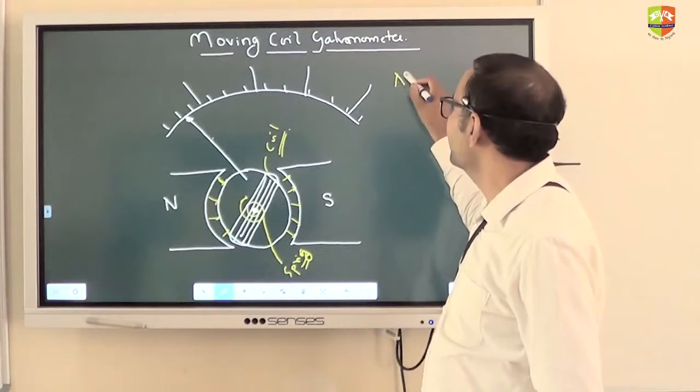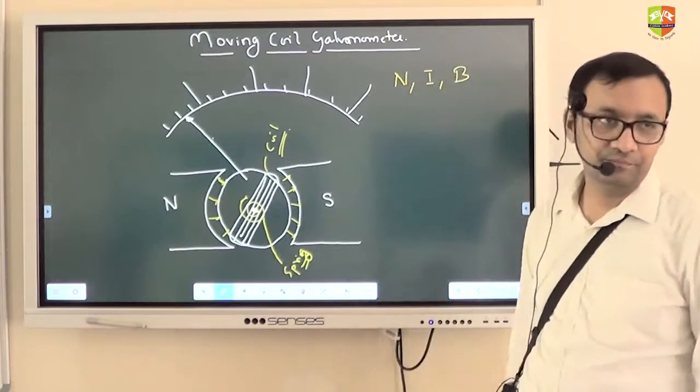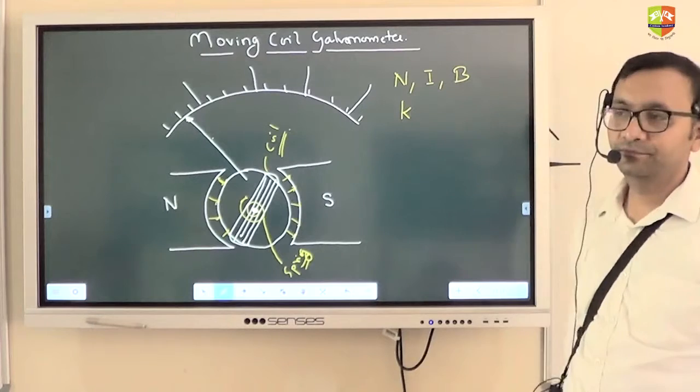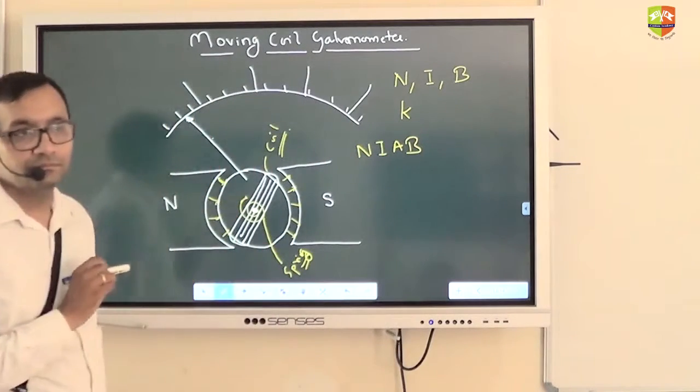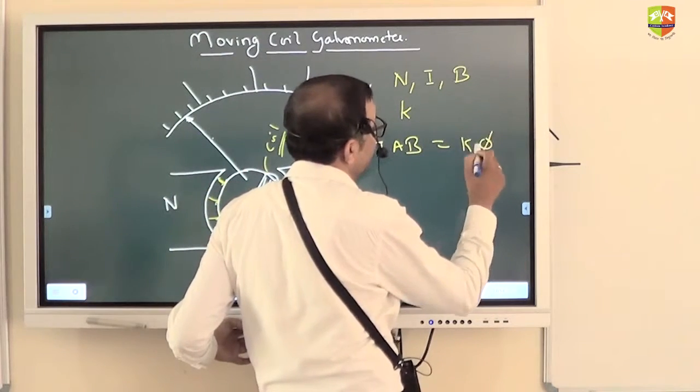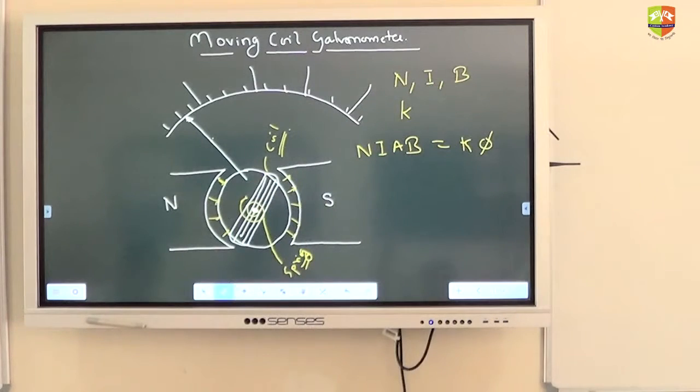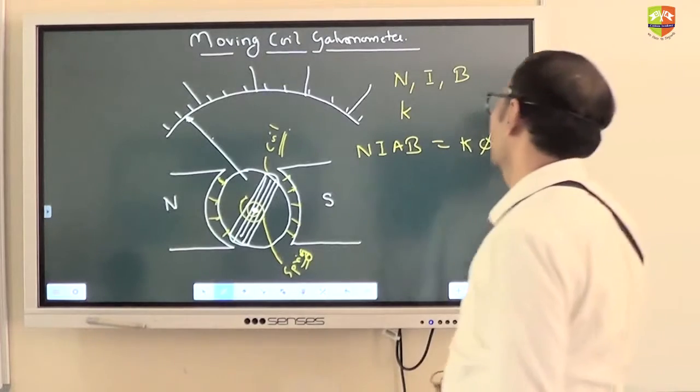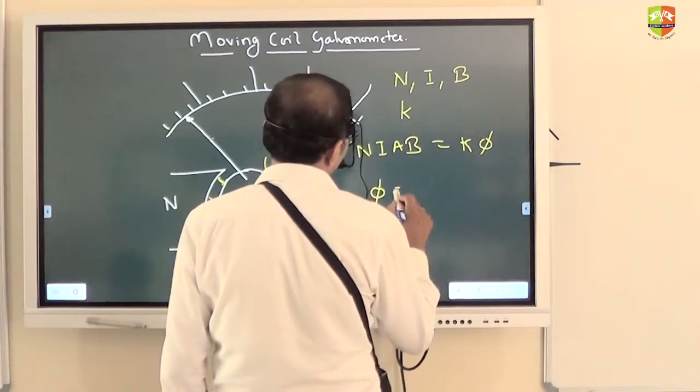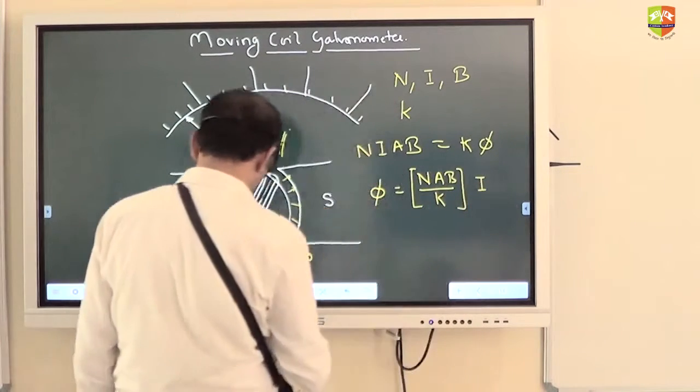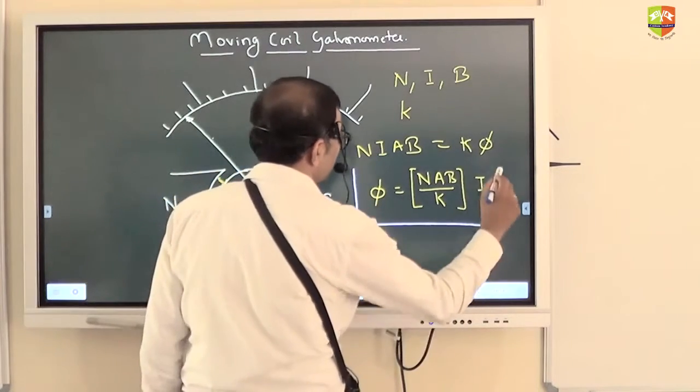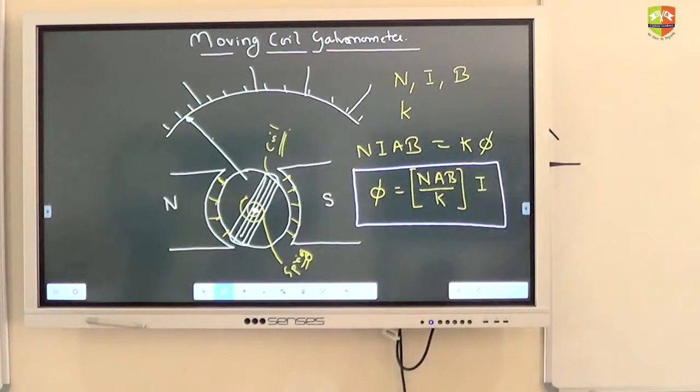So suppose number of turns is N, current is I, and magnetic field is B, and torsional spring constant is K. Then what is the equation? Equation is like this: NIAB. This is the torque. When this torque equals K times phi, phi is the amount of rotation, then it will not rotate. Phi is the angle of rotation. Now you can see that angle of rotation is directly proportional to the current. Yes.